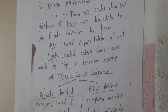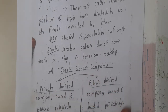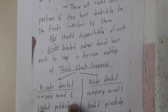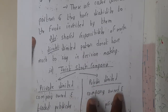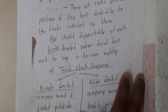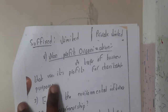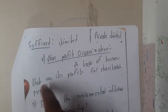The next type is joint stock company. Under joint stock companies, we have both private and public. Private companies are owned and traded privately, while public limited companies are owned and traded publicly.